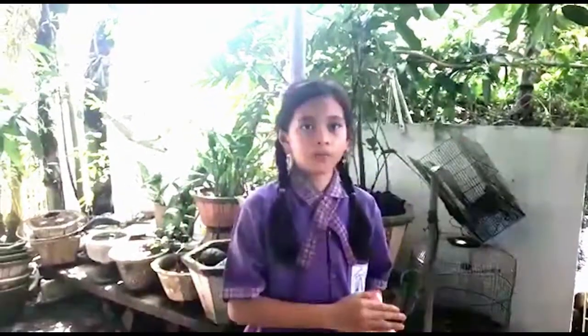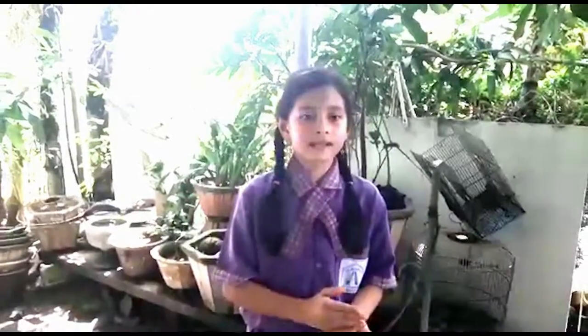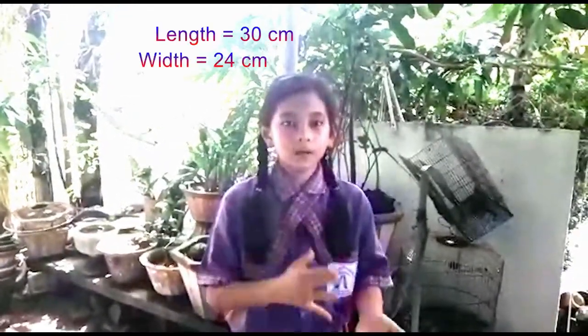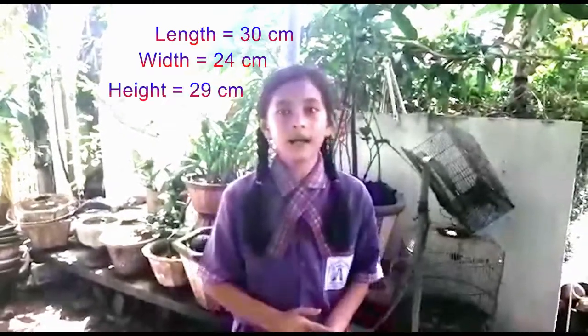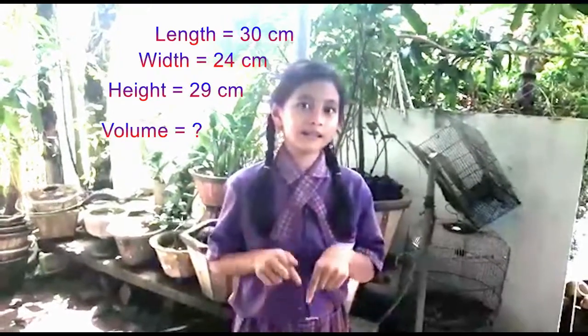Now, it's the most difficult one. This is your block. And I'm not going to show you the answer. You're going to show me the answer at the comments below. Okay? Now, your block has the length of 30 centimeters, the width of 24 centimeters, and the height of 29 centimeters. How much is it?